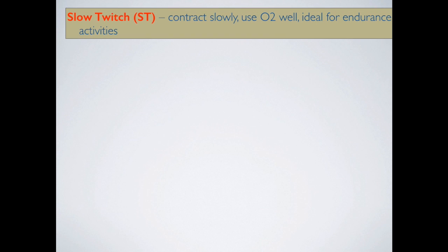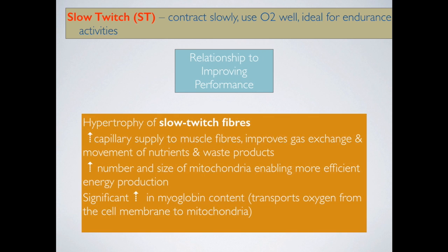In terms of improving performance, if we train slow twitch fibres, they do experience some hypertrophy — they grow and get a little bit stronger. They have an increased capillary supply, which improves gas exchange and movement of nutrients and waste products. So as we train these types of muscle fibres through aerobic activity such as marathons and long-distance triathlon, we improve the capillary supply to these muscles, which improves gas exchange.